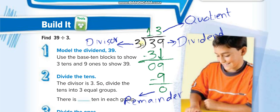We have a one-digit divisor, so we take one digit from 39 — just the first digit, which is 3. If the first digit is less than the divisor, then we take both digits together. But here, this 3 is equal to the divisor, so we don't need the second digit. We think: 3 times what equals 3 or less? 3 times 1 equals 3, so we write 1 above the 3.